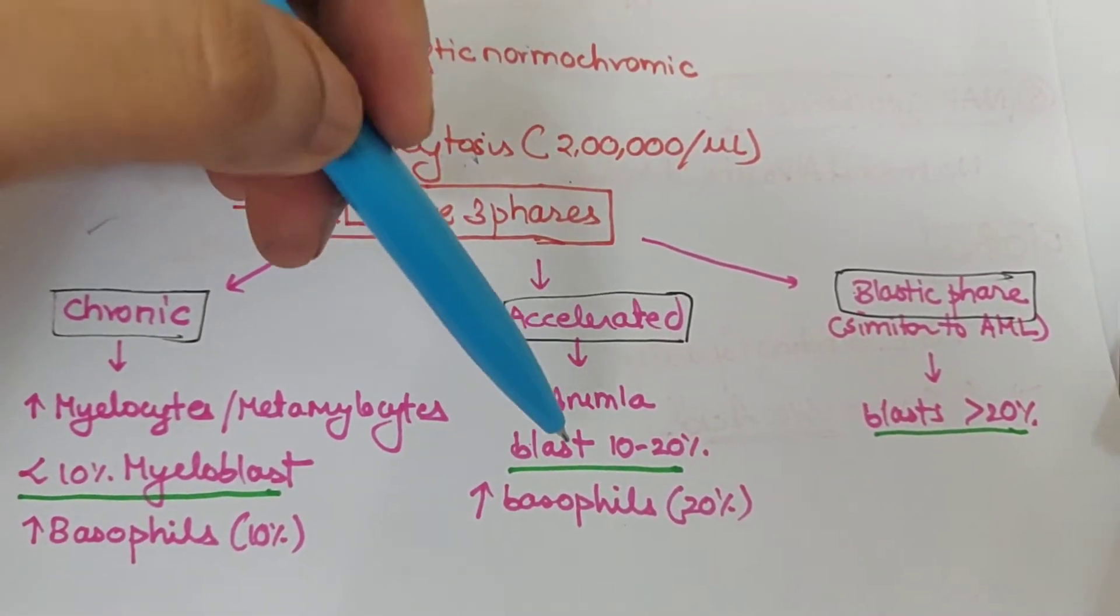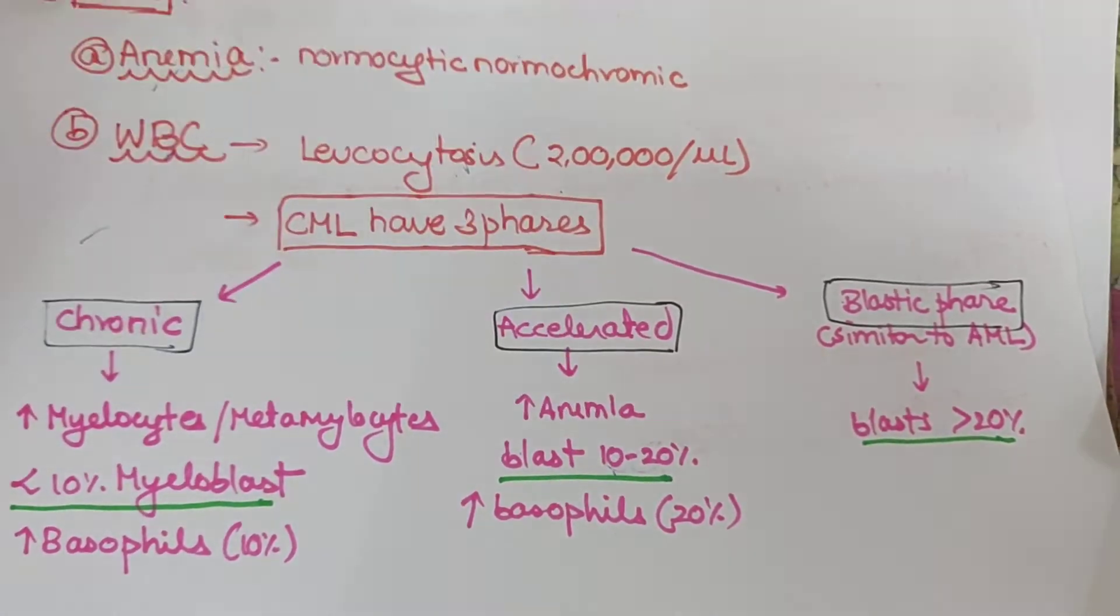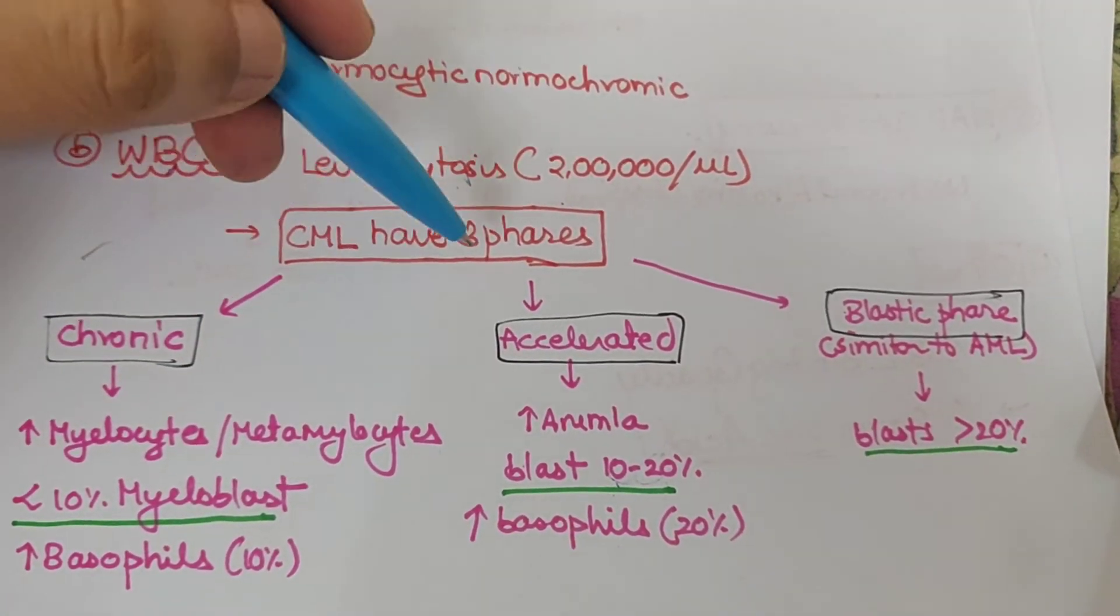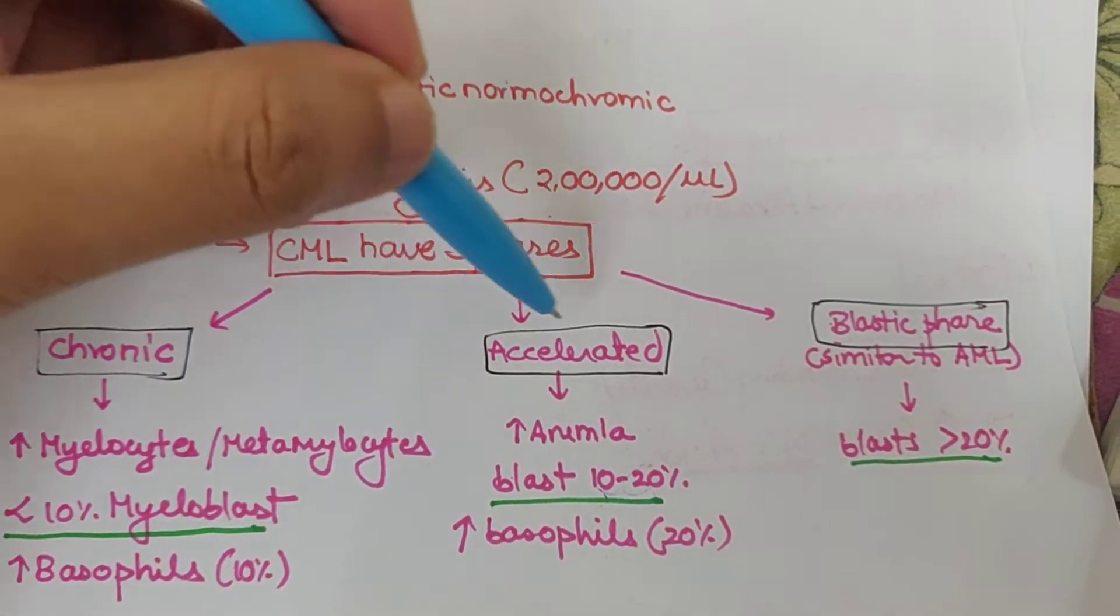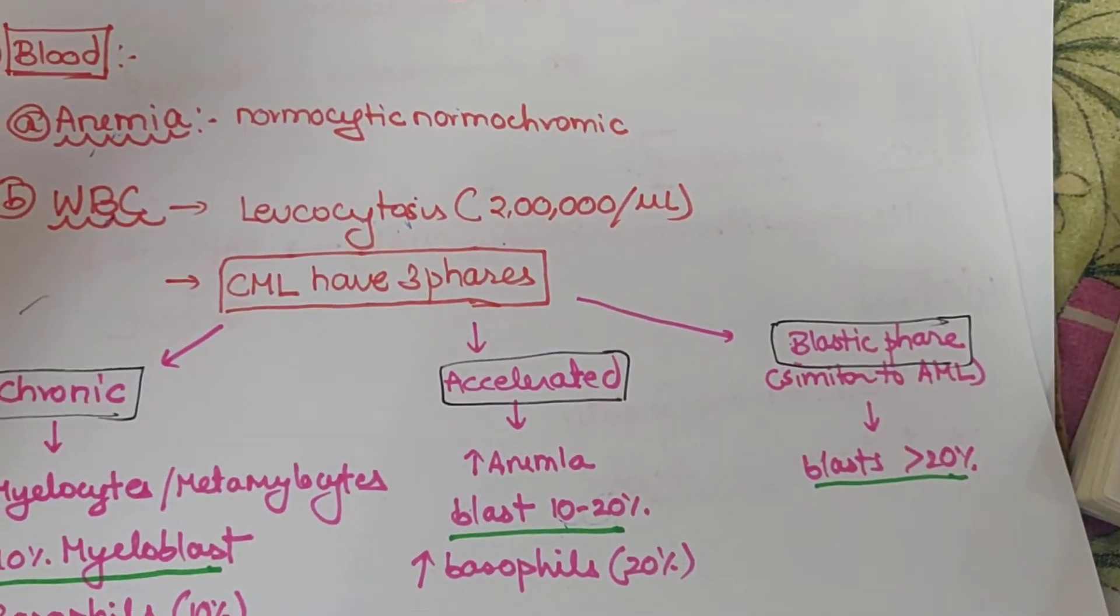In accelerated phase we see increased anemia and blasts developing at 10 to 20%. These three phases generally progress towards the blastic phase which is similar to AML.